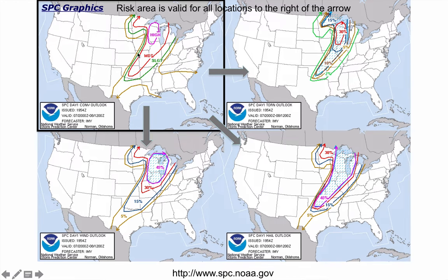In Wisconsin there was a 30% probability of having a tornado within 25 miles of any point inside that arrow, and the hatching means at least a 10% probability of an EF2 tornado. Below that is the wind probability outlook — a 45% chance of having winds over 58 miles per hour, and where there's hatching, a 10% or greater probability of winds beyond 75 miles an hour.